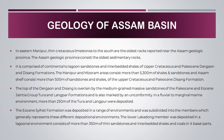The Assam Geologic Province consists of the oldest sedimentary rocks, comprised of continental to lagoonal sandstones and interbedded shales of Upper Cretaceous and Paleocene Dergao and Disang formations. The Manipur and Mizoram areas consist of more than 5,300 meters of shales and sandstones, and the Assam shelf consists of more than 500 meters of sandstones and shales. The Dergao formation is overlaid by medium-grained massive sandstones of the Paleocene and Eocene Jaintia group Tura and Langpur formations, marked by an unconformity. More than 250 meters of the Tura and Langpur were deposited in a fluvial to marginal marine environment. The Eocene Silet Formation was deposited in a range of environments and was subdivided into members representing different depositional environments. The Lower Lakadung member was deposited in a lagoonal environment, consisting of more than 350 meters of thin sandstones and interbedded shales and coals in its basal parts.